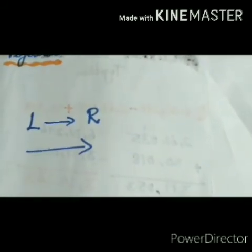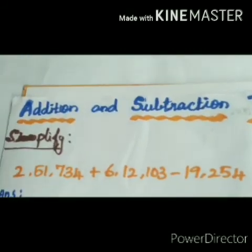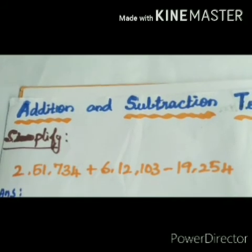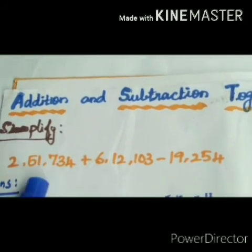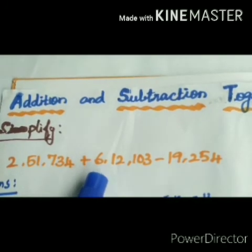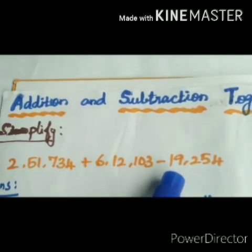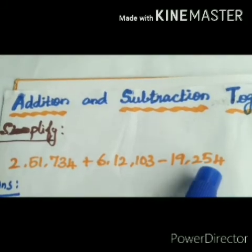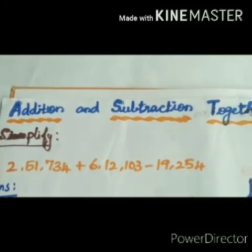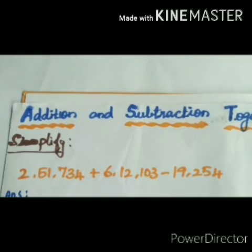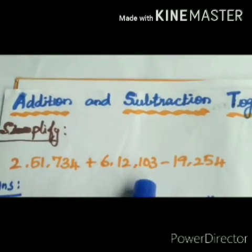When we add and subtract together, always solve from left to right side. Whichever operation comes first, we have to do that first. This question will be done in two parts. Which operation comes first? Addition. Then you do the addition and get one answer. From that answer, you have to subtract 19,254.